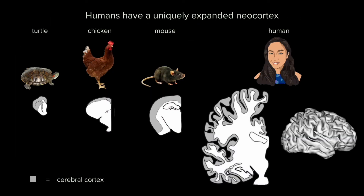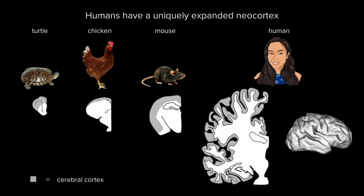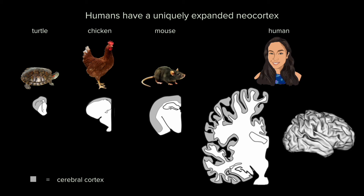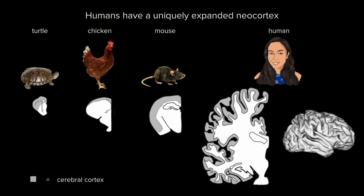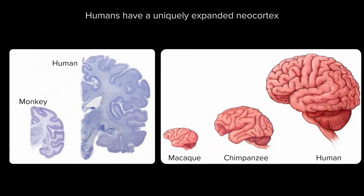There is great interspecies diversity in cortical anatomy. The three non-human species shown here have a smooth, or lissencephalic, brain. The gyrification of the human cortex allows for even greater cortical volume than is possible by just expanding the overall volume of the brain. Even when compared to our closest evolutionary relative with a gyrencephalic brain, the chimpanzee, the human cortex is three times larger, because we humans have enormous brains for our body size.